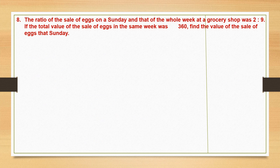Question 8. The ratio of sale of x on a Sunday and that of the whole week — so here we are talking about two quantities: sale on Sunday and sale during the whole week. The ratio is 2 is to 9, where 2 is for Sunday and 9 is for the whole week. The order is very important. If the total value of the sale of x in the week was 360 rupees, find the value of sale of x on Sunday.